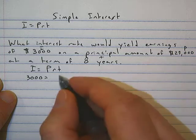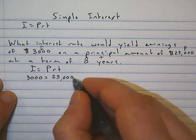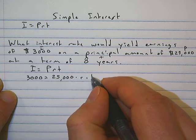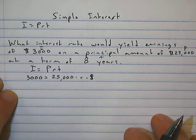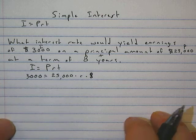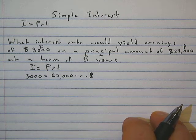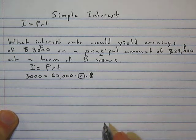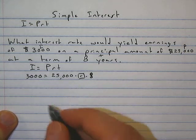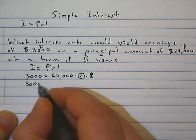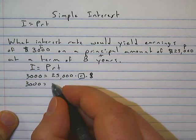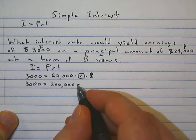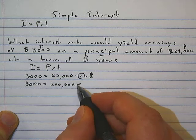So we have 3,000 equals 25,000 times—well our rate we don't know yet—but our time is 8 years. So then at this point we can just try to isolate the variable. The first thing we'll do is multiply 25,000 by 8, so 3,000 equals 25,000 times 8 is 200,000.